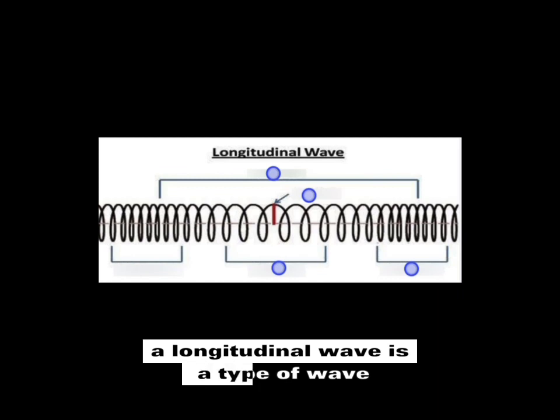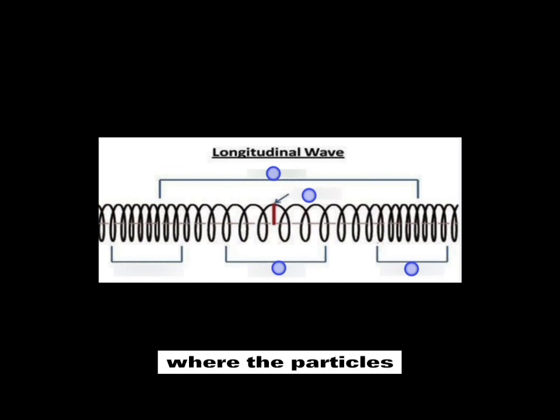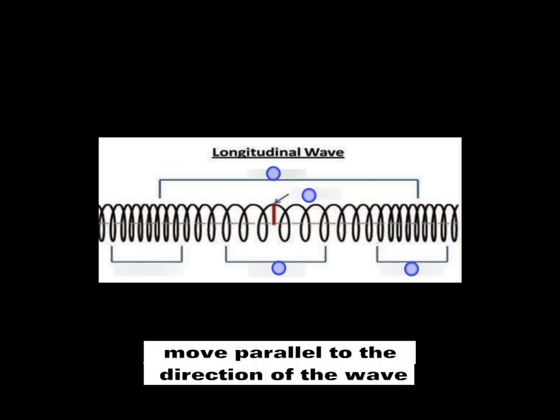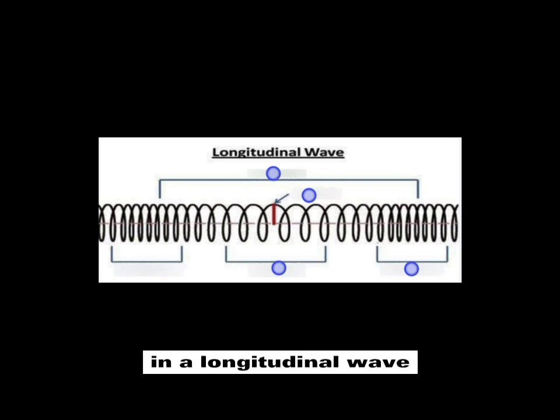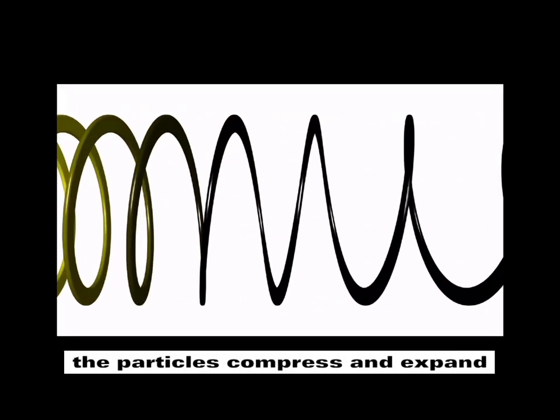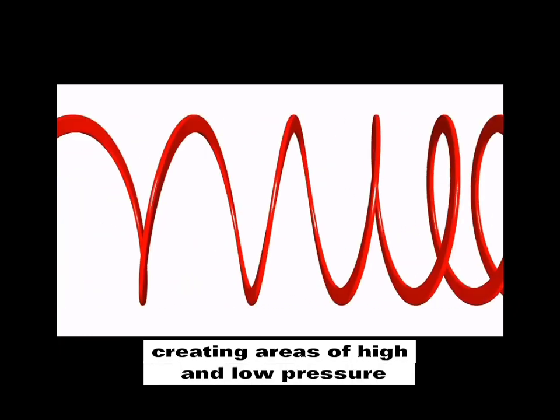A longitudinal wave is a type of wave where the particles move parallel to the direction of the wave. In a longitudinal wave, the particles compress and expand, creating areas of high and low pressure.